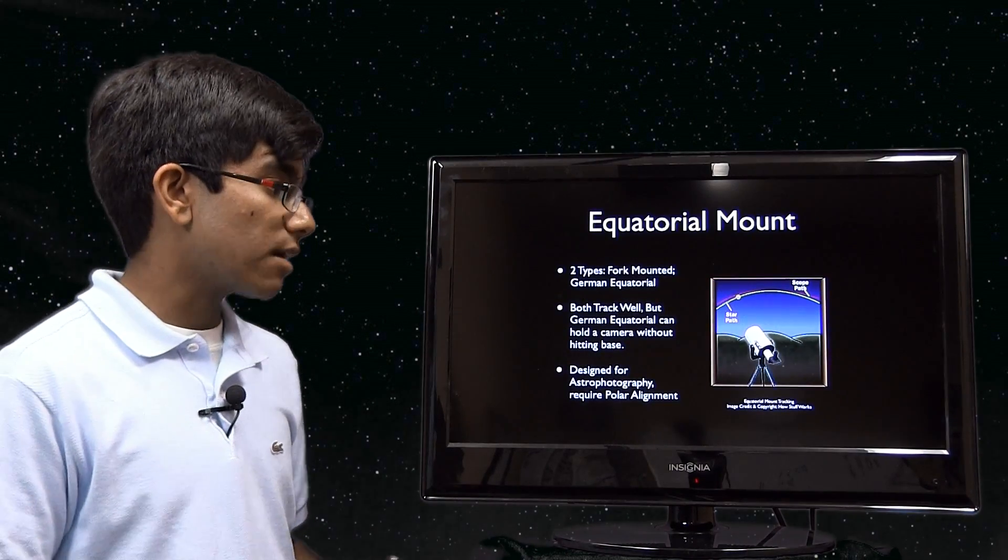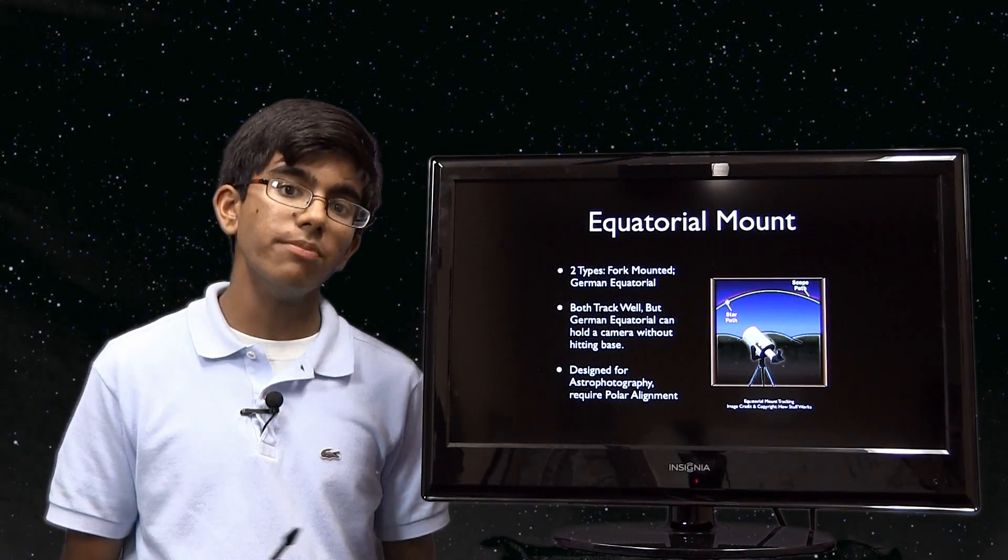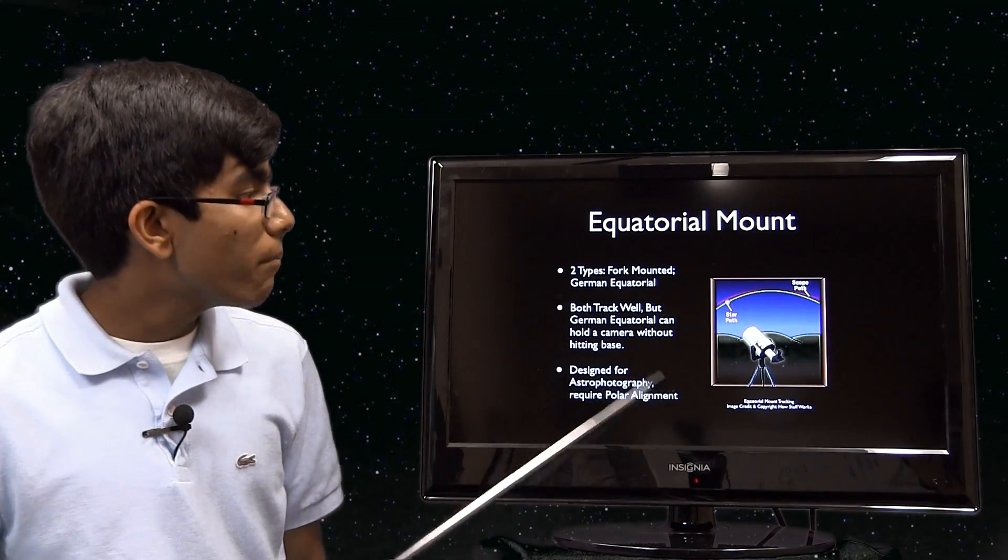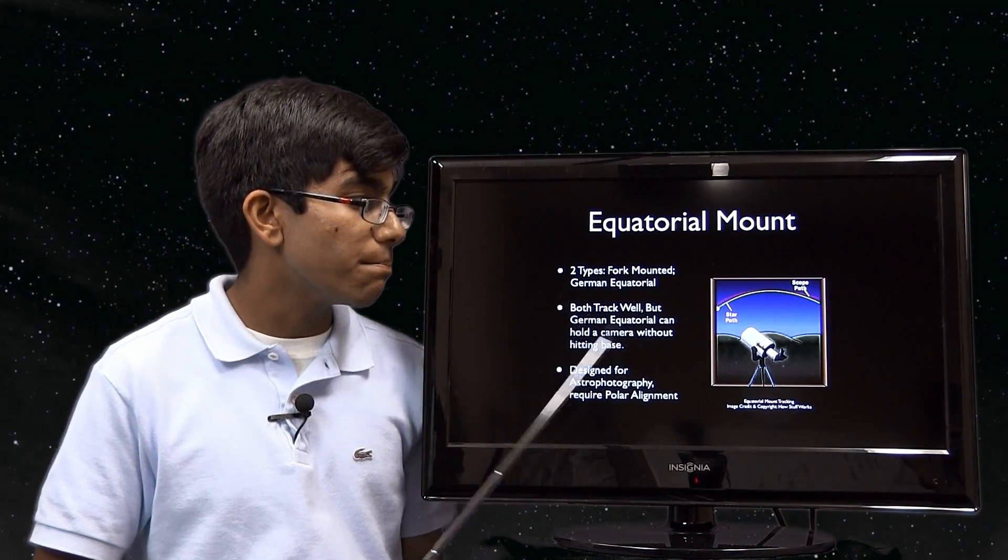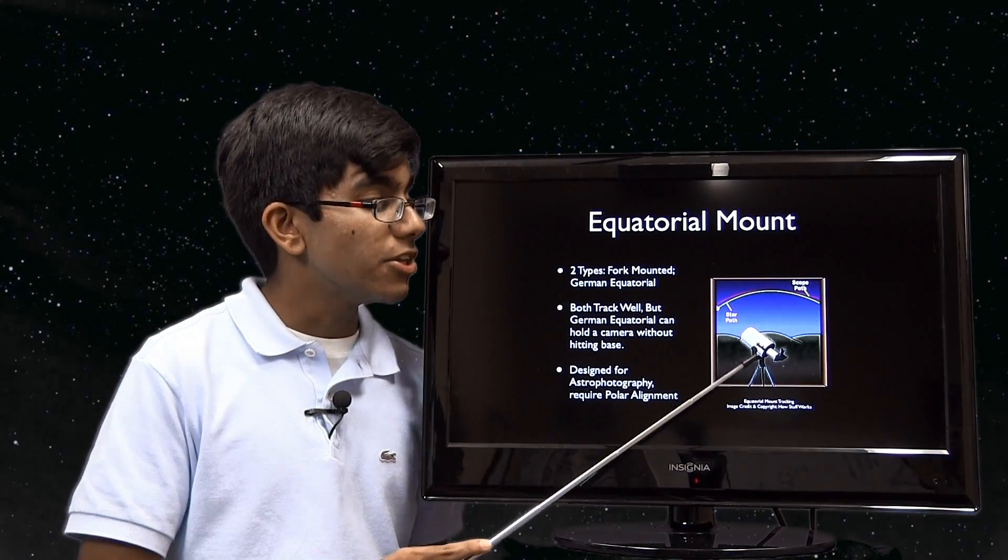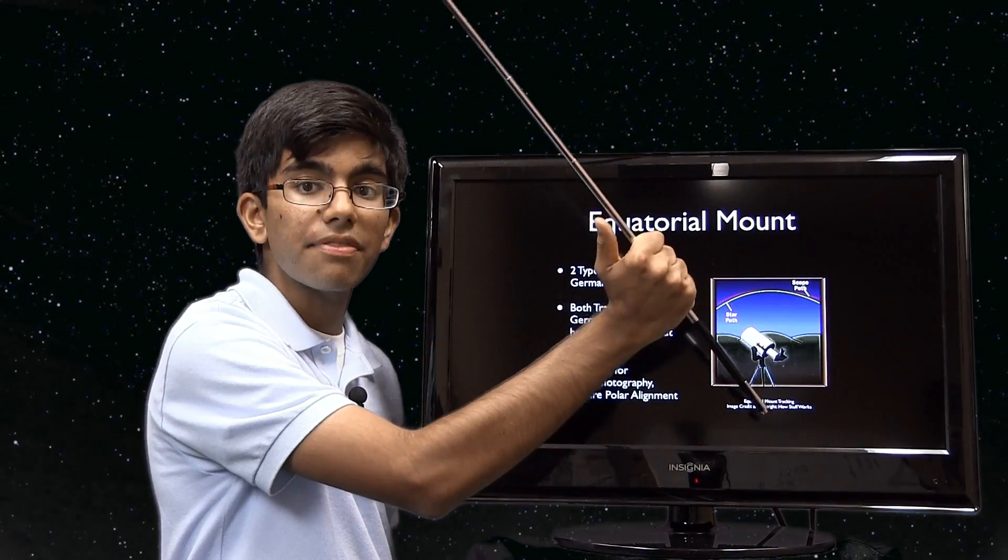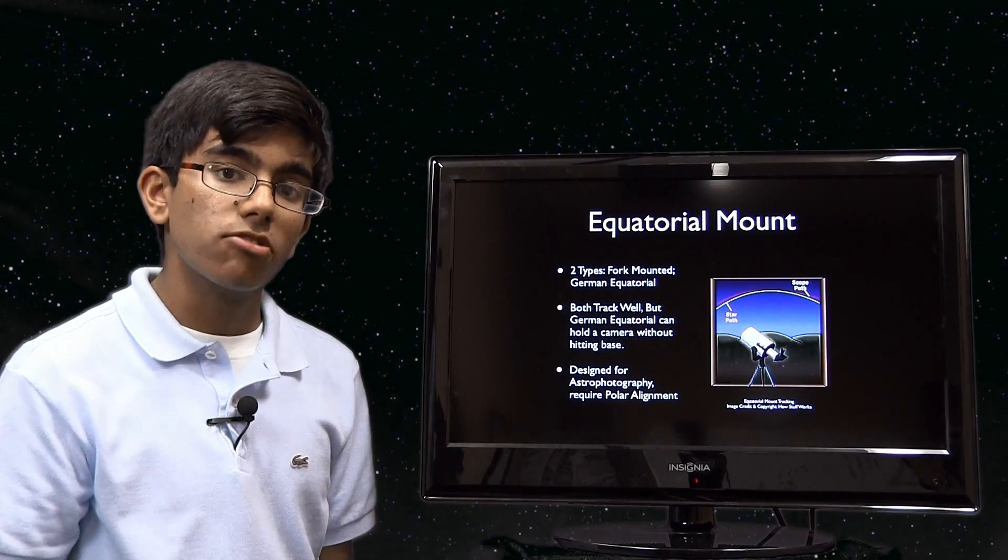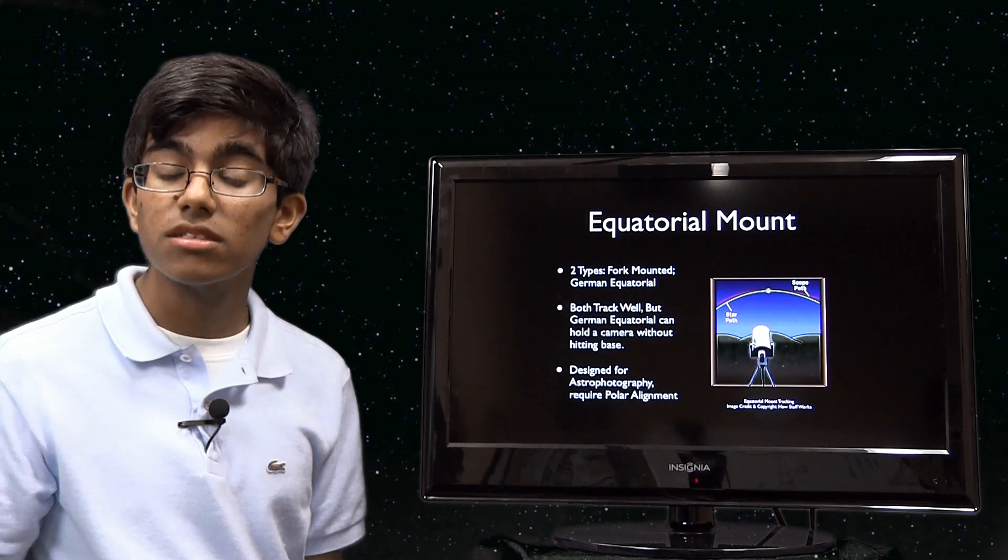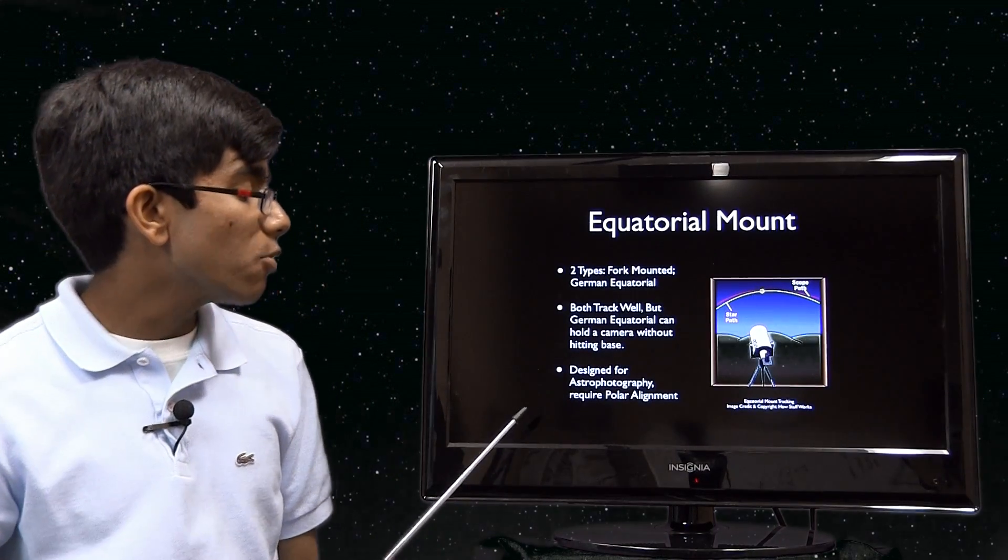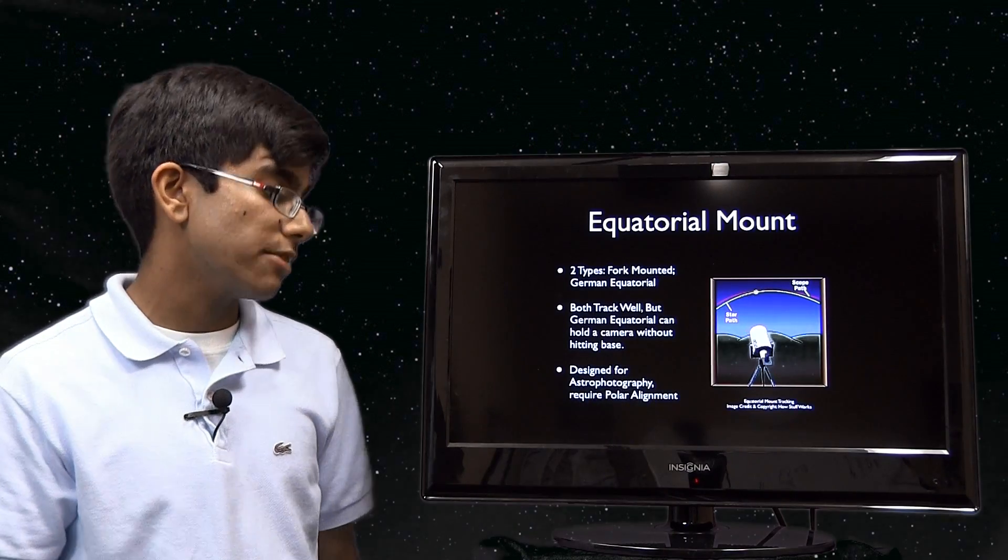Let's move on to the equatorial mount. Two types: the fork mount and the German equatorial. They work in pretty much the same way. Both track well, but the German equatorial can hold a camera normally without hitting the base. When you have a fork mount, if you were to put a camera here, you cannot easily bring it up like that. That's one reason German equatorial mounts are very popular with astrophotographers, where they like to put a lot of stuff back there: auto-guiding systems, cameras, etc.